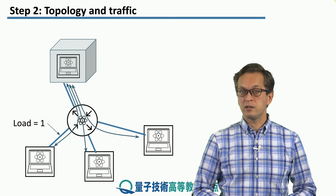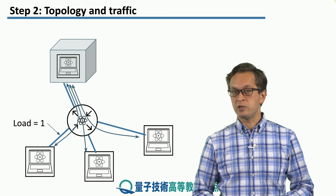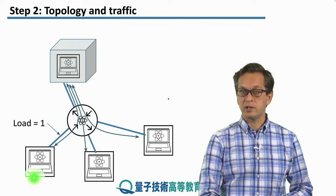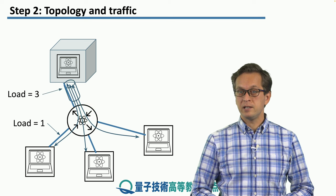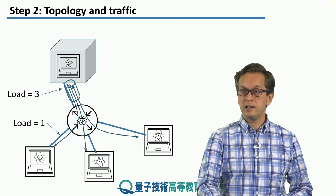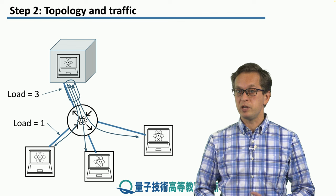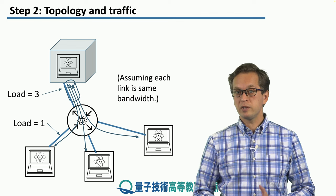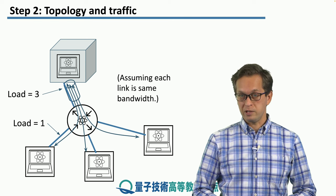If we assign the load 1 in some arbitrary units to the link between a client and the router, then we immediately see that the load on the link between the router and the mainframe must be equal to 3, assuming that the bandwidth is the same for all the links.